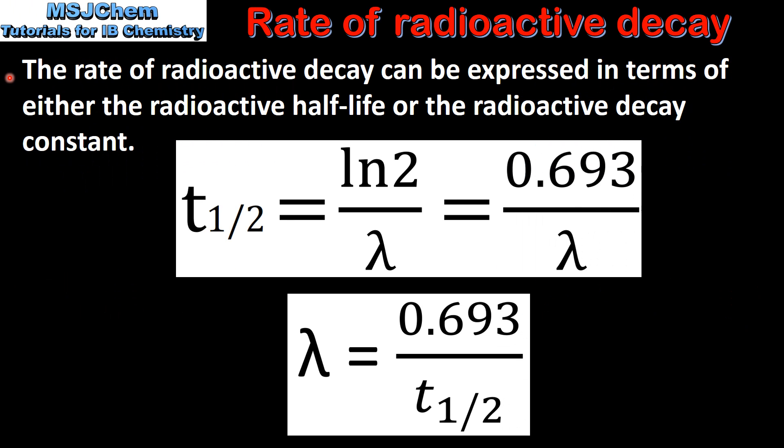The rate of radioactive decay can be expressed in terms of either the radioactive half-life or the radioactive decay constant.